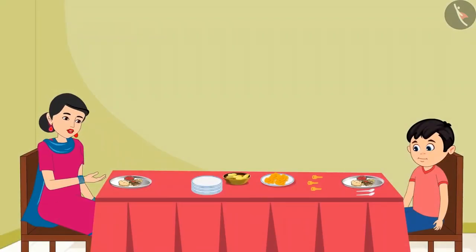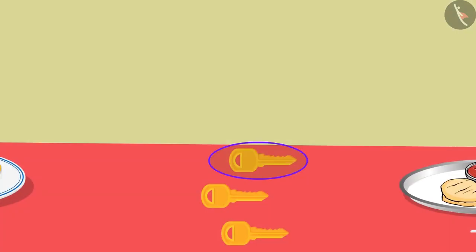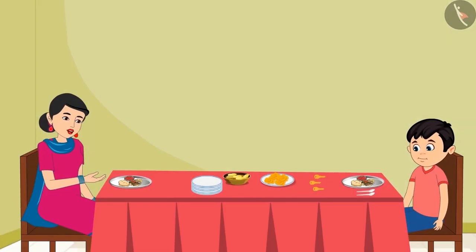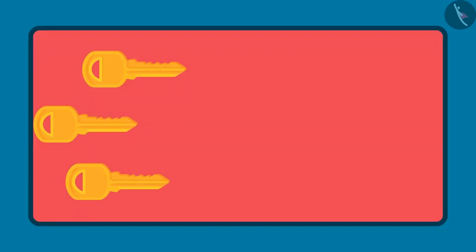Now see the three keys kept near you Chotu. One is my room key, one is your room key and one is the house key. Now can you tell me Chotu, which of the three keys is the longest key and which key is the shortest key?